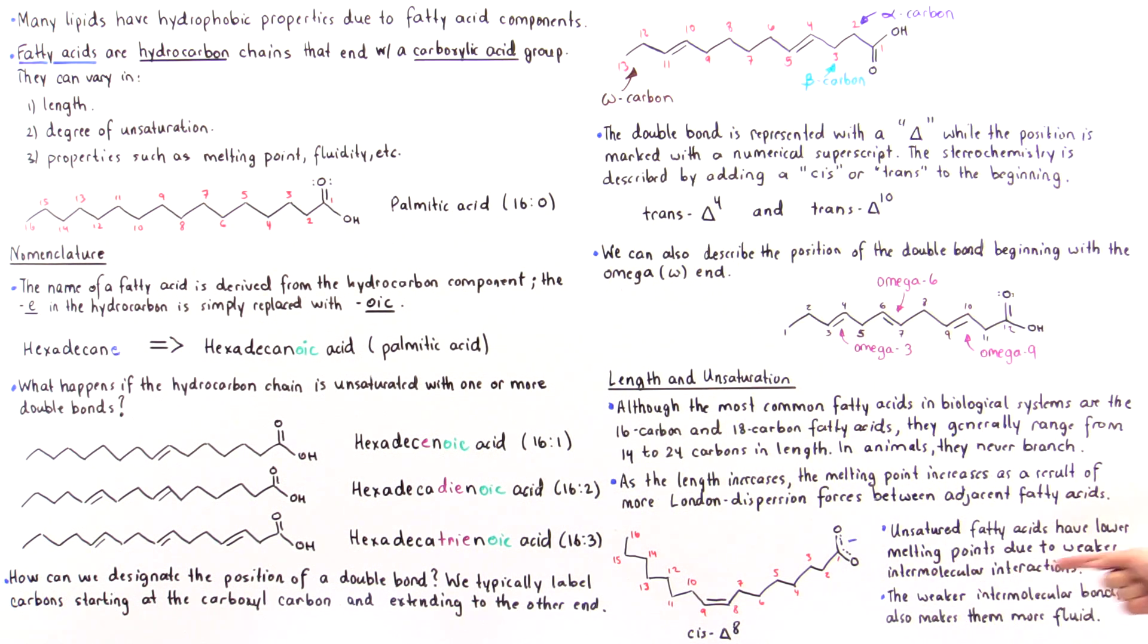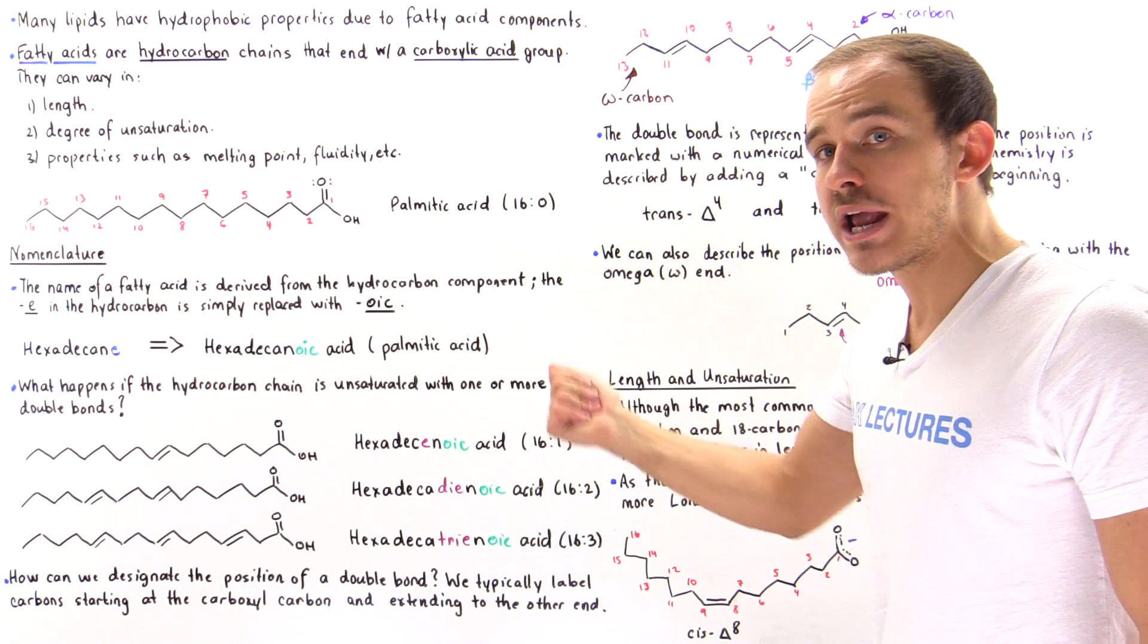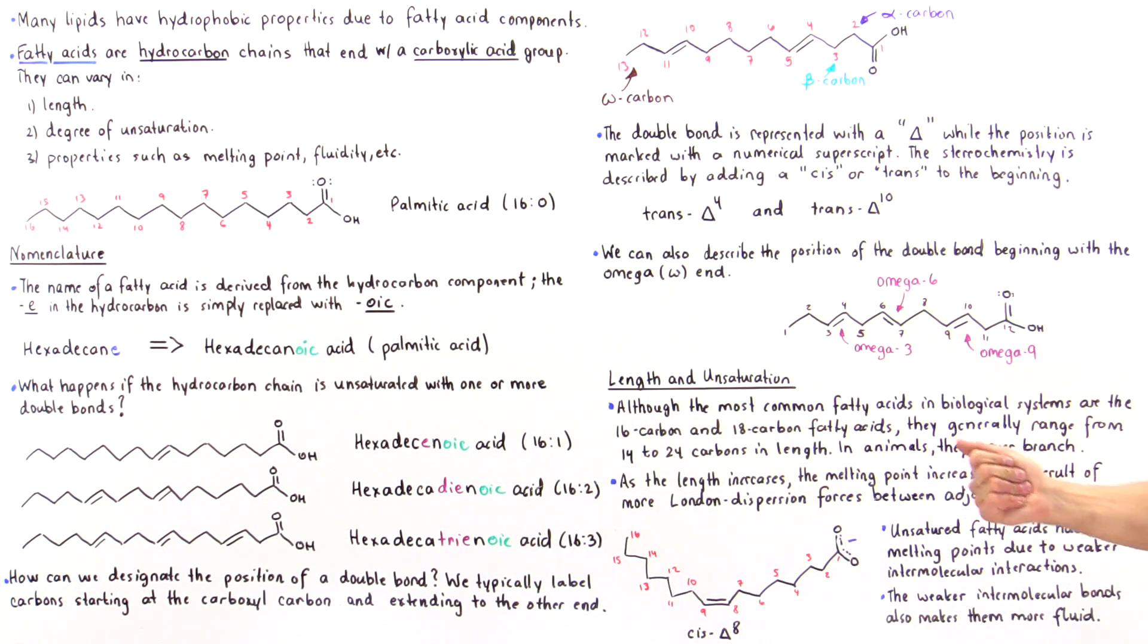So unsaturated fatty acids have a lower melting point due to weaker intermolecular interactions. Less energy must be input to actually break those weaker bonds, and so that means a lower melting point.